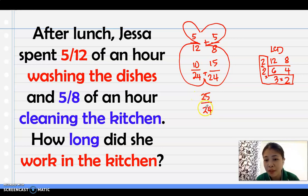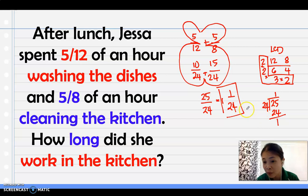So we can now add since it's similar: 10 plus 15 is 25 over 24. Since this is an improper fraction, we need to change it into a mixed number by dividing 25 divided by 24. That's 1 and 1/24. Therefore, Jessa spent 1 and 1/24 hours in the kitchen. For a shortcut, instead of dividing, you can simply subtract 25 minus 24 equals 1 over 24, then write 1 as the whole number.